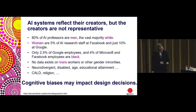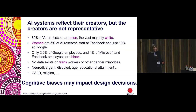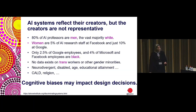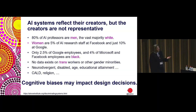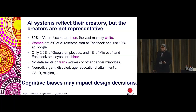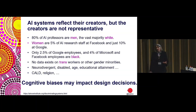Only 2.5% of Google employees and 4% of Microsoft and Facebook employees are black. We have no data on trans workers or other gender minorities, and we don't know about neurodivergence, disability, age, educational attainment, cultural and linguistic diversity, or religious diversity. We don't know about many dimensions of diversity.